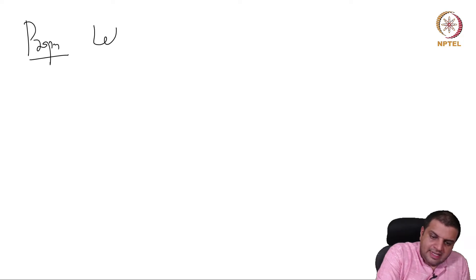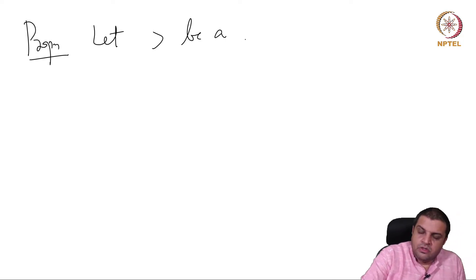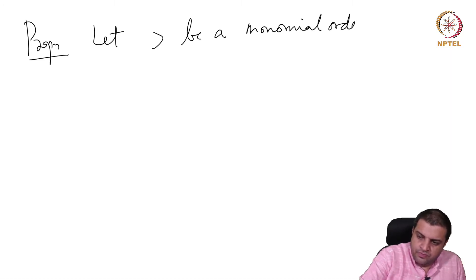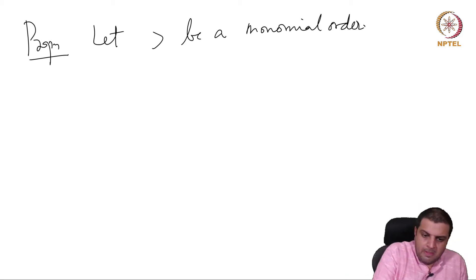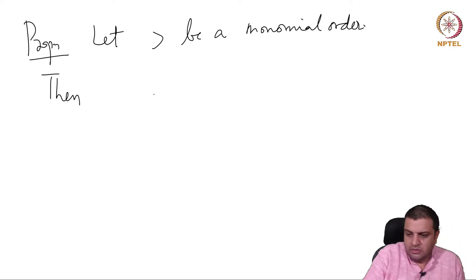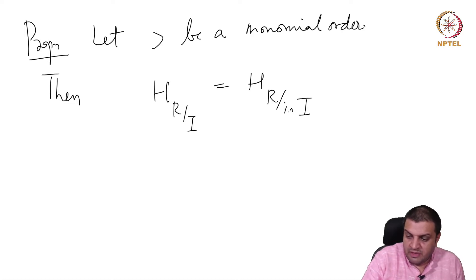Let greater-than be a monomial order. Then the Hilbert series of R mod I is equal to the Hilbert series of R mod the initial ideal of I.